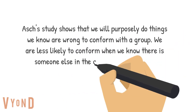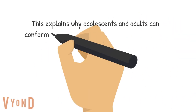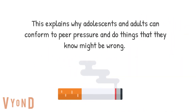Asch's study is an influential and important study in psychology because it shows that we will purposefully do things we know are wrong to conform to the group. We are less likely to conform when we know there's someone else in a group that shares our views or opinions. This explains why adolescents and adults can conform to peer pressure and do things they know might be wrong.